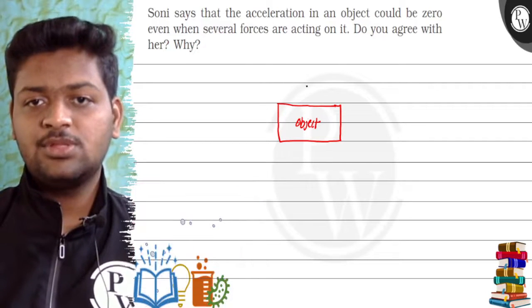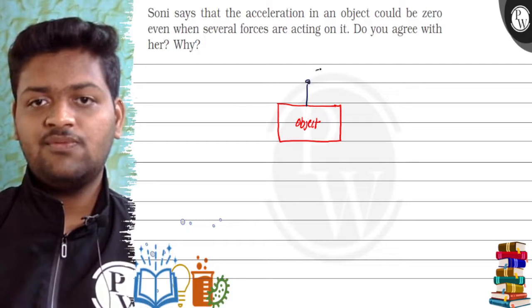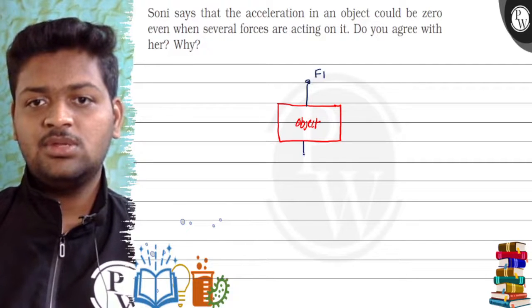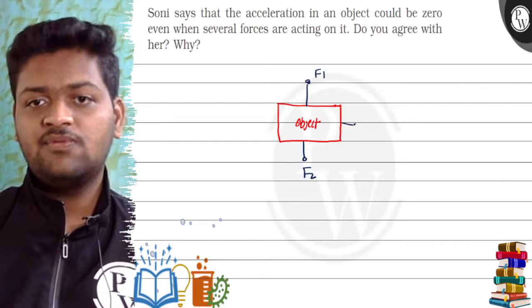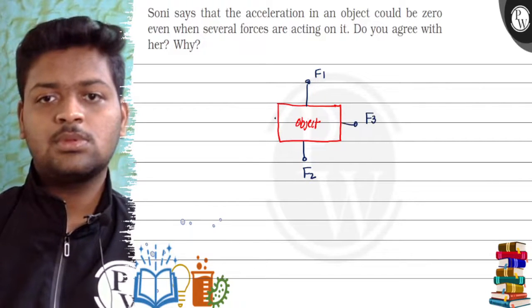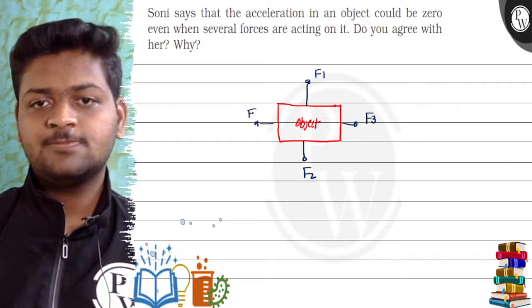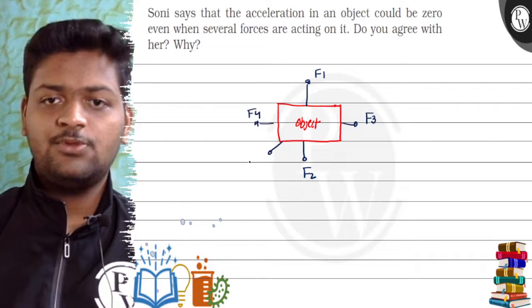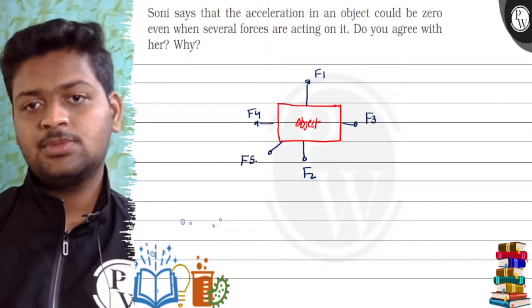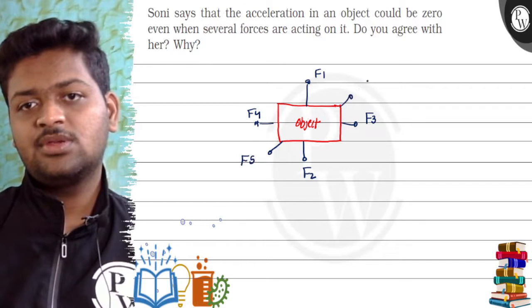We will add some forces. Imagine a force F1 is acting over here, a force F2 is acting over here, force F3 over here, force F4 over here, force F5, force F6 in this direction.